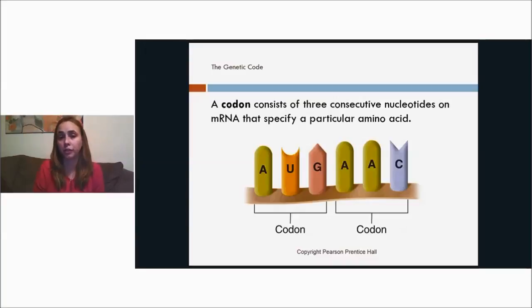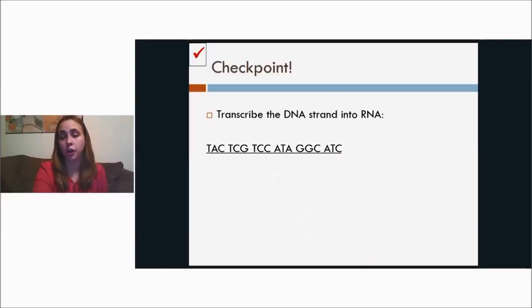So if you were to transcribe this DNA strand and turn it into RNA, go ahead and take a moment, just pause the video, and write down the DNA strand and see if you can make it into RNA, remembering that a T in DNA bonds to an A in RNA. An A in DNA bonds to a U in RNA, C to G, and G to C. Okay, I hope you took a second to write that down, see if you got it correct.